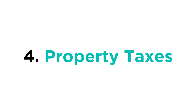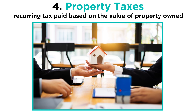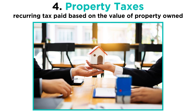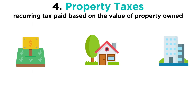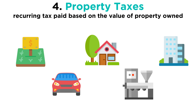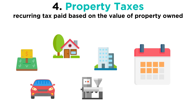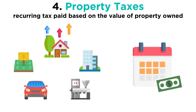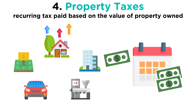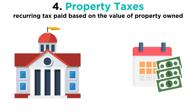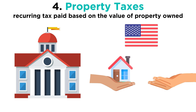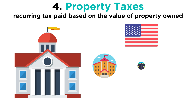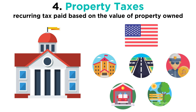Number four: property taxes. A property tax is a recurring tax paid based on the value of the property we own. Typically it's on real estate, like land and buildings, but also personal property like vehicles and equipment. At minimum, we usually pay property taxes once a year, and if the value goes up on our property, then we pay more property taxes. Governments may also collect property taxes when the property changes owners. In the United States, property taxes are the single biggest source of state and local revenue, funding things like schools, roads, the police, and other very important services.